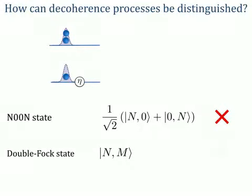Double-FOX states feature bosonic bunching, but they are not suitable for decoherence diagnosis in the Mach-Zehnder interferometer either, since they do not carry a relative phase.